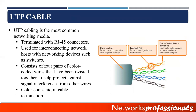UTP cabling is the most common networking media, terminated with an RJ45 connector. There are two types of connectors: RJ11 and RJ45. The RJ11 connector is used for telephone connections — it has four pins and is a smaller size. The RJ45 connector used in networking for twisted pair cable is larger than RJ11 and has eight connections inside, matching the eight cables of twisted pair cable.